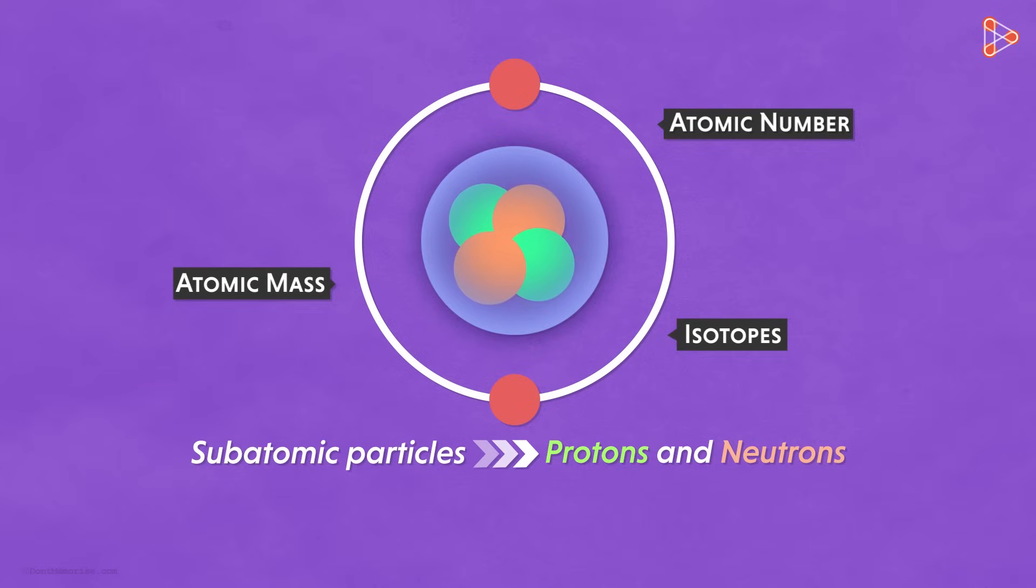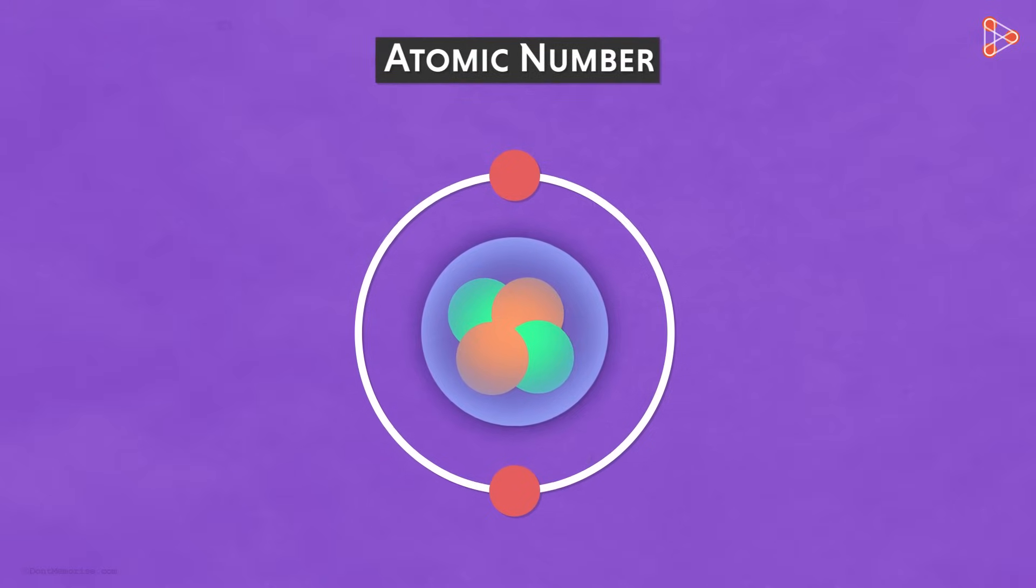Wait a second, do we know what these are? What do we mean by atomic number? How is it different from the atomic mass and what exactly are isotopes? Let's begin with the atomic number first.